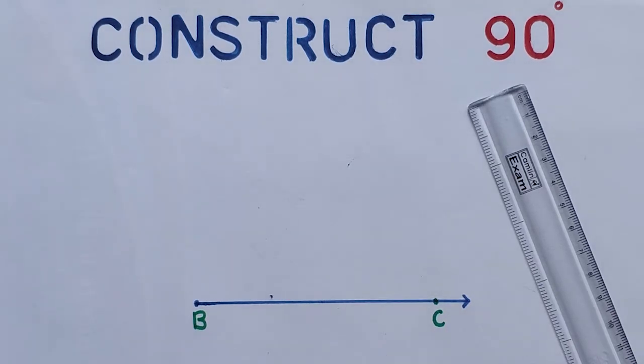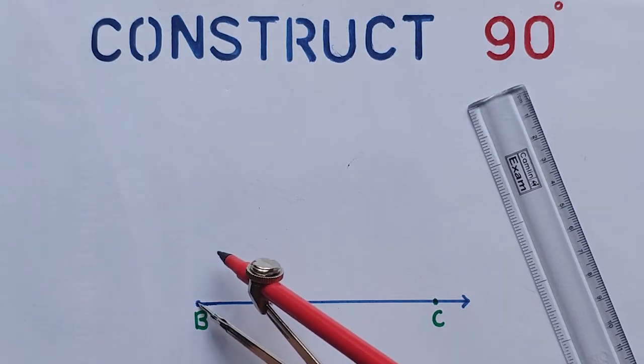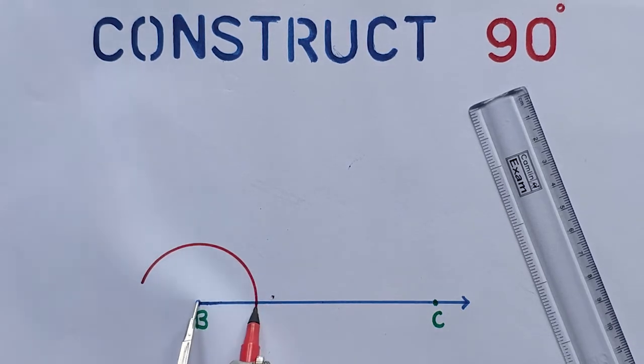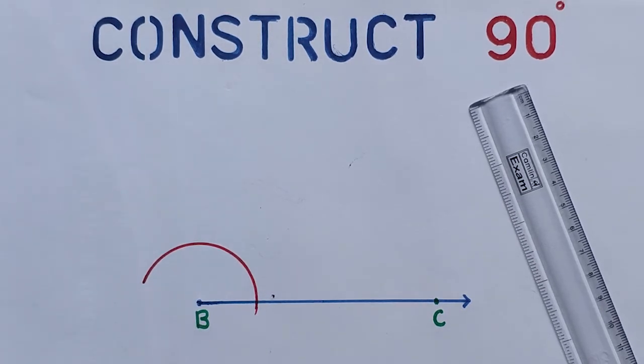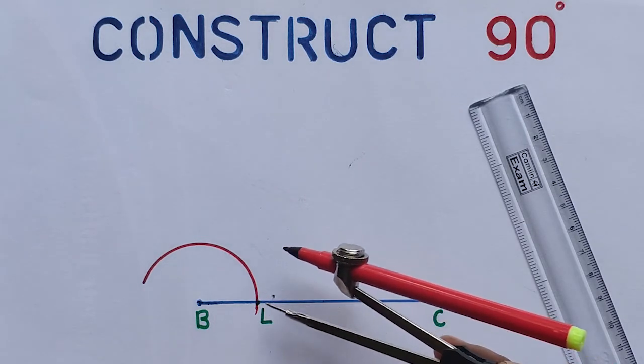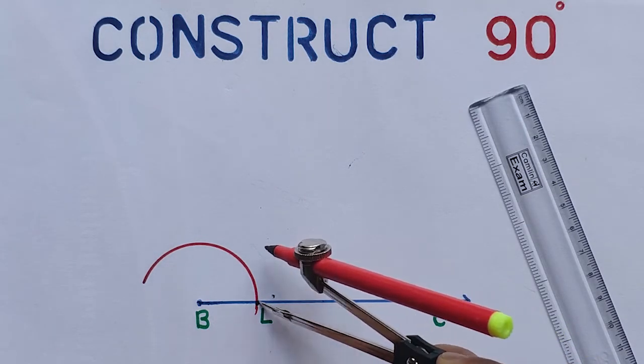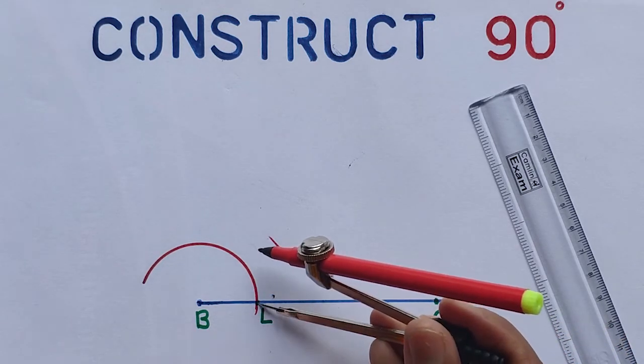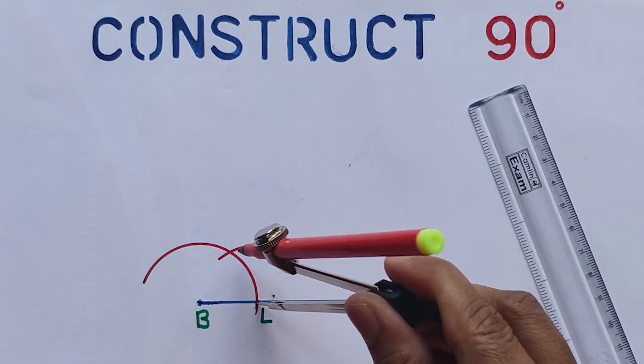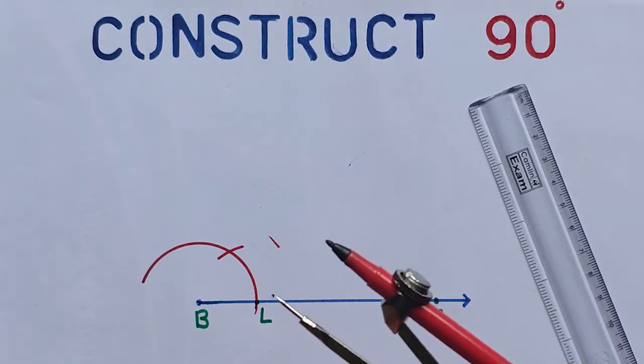Now place the metal tip on B and take any radius, draw an arc. This arc intersects BC at L. Then without changing the compass, place the metal tip on L and draw an arc. That means we have drawn 60 degrees, so that arc intersects the first arc at M.